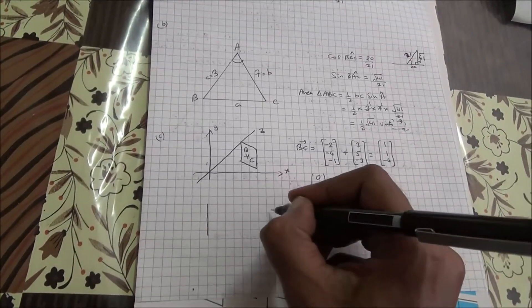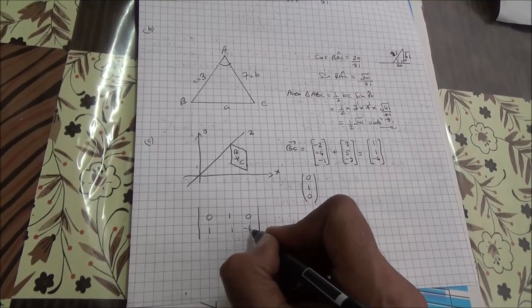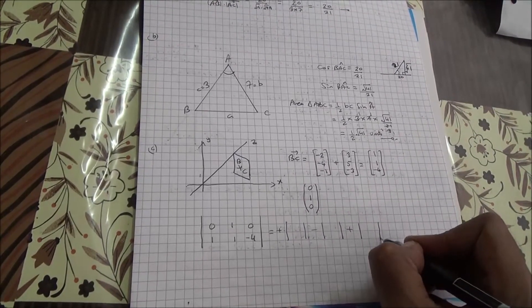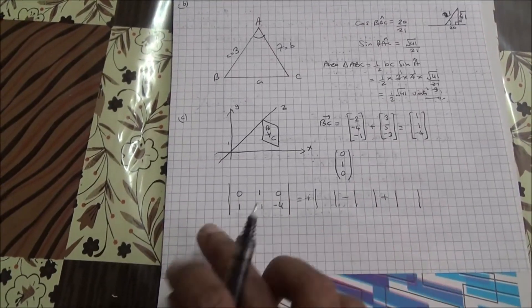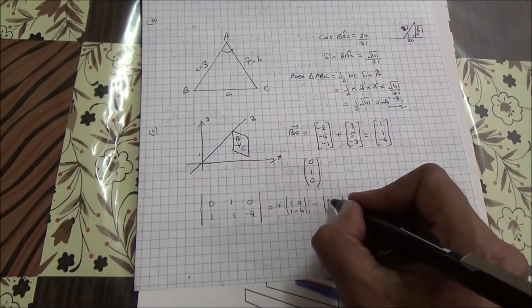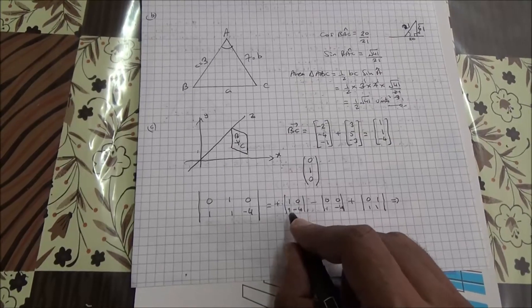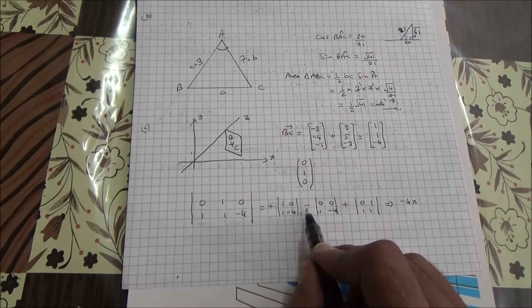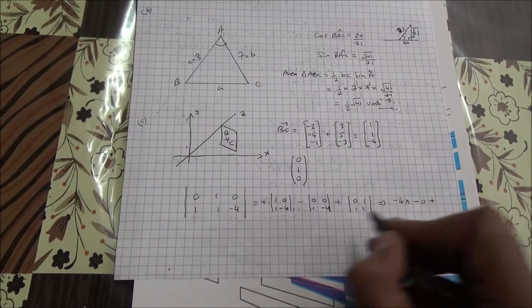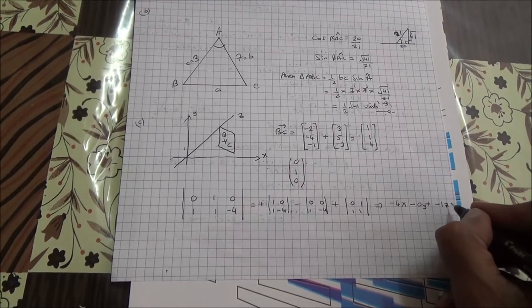So I have the two direction vectors: (0, 1, 0) and (1, 1, minus 4). Finding the determinant of those vectors gives the normal vector to the plane. The first component is 1 times minus 4 minus 0, which is minus 4 for x. The second component is 0 times minus 4 minus 0 times 1, which is 0 for y. The third component is 0 times 1 minus 1 times 1, which is minus 1 for z. So the normal vector gives us minus 4x plus 0y minus z equals d.